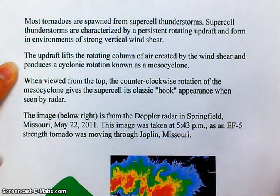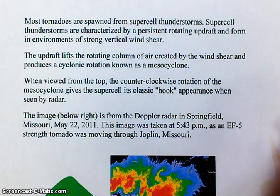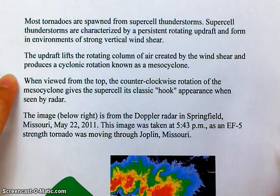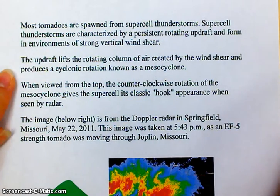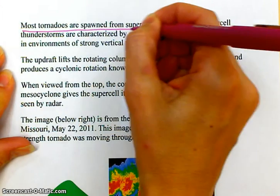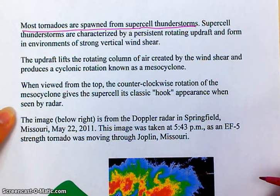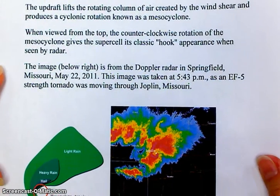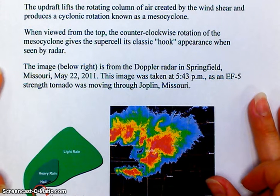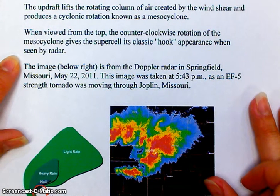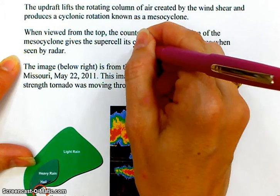The updraft lifts the rotating column of air created by the wind shear and produces a cyclonic rotation known as a mesocyclone. Most importantly, remember that most tornadoes are spawned from supercell thunderstorms. When viewed from the top, the counterclockwise rotation of the mesocyclone gives the supercell its classic hook appearance when seen on radar. This is what meteorologists tend to look for when telling you about the possibility or likelihood of a tornado.